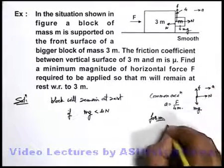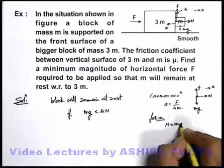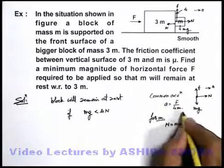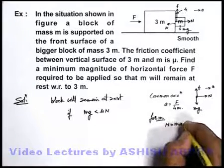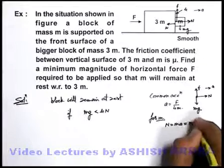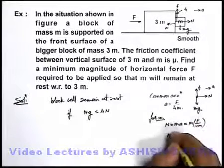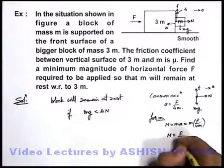So in horizontal direction we can write its equation: N is equal to ma. If we put a as F upon 4m, you can see the normal reaction here is given. That is equal to m into F upon 4m. So the normal reaction will be equal to F by 4.